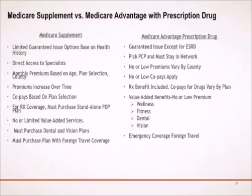Key consideration 3: Supplement plans have a monthly premium based on your age, plan selection, and county of residence, and your monthly premium increases over time. MAPD plans have no or low premiums, which vary by county. Key consideration 4: Supplement plans have co-pays based on plan selection, while MAPD plans have no or low co-pays, but MAPD plans could have co-insurance for services such as radiation therapy. Key consideration 5: For prescription drug coverage with supplement plans, you must purchase a standalone prescription drug plan. With MAPD plans, prescription drug coverage is included. Co-pays for drugs and coverage in the gap or donut hole also vary by MAPD plan.